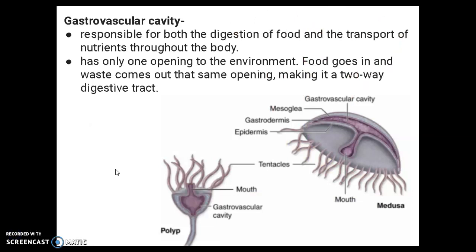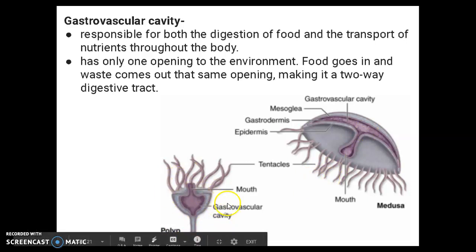Cnidarians also don't have a digestive system like other animals. They have what's called a gastrovascular cavity, which is responsible for both the digestion of food and the transport of nutrients throughout the body. Food goes in through the mouth, the gastrovascular cavity digests it, absorbs the nutrients, and transports those nutrients throughout the body. Any waste comes back out through the mouth the same way — this applies to both the polyp and medusa body forms.